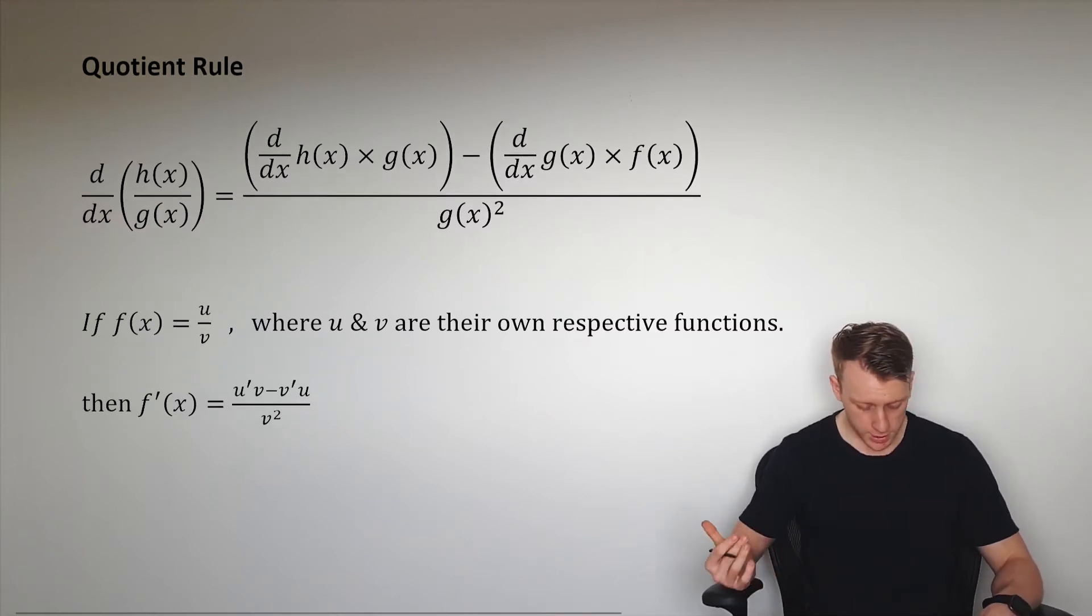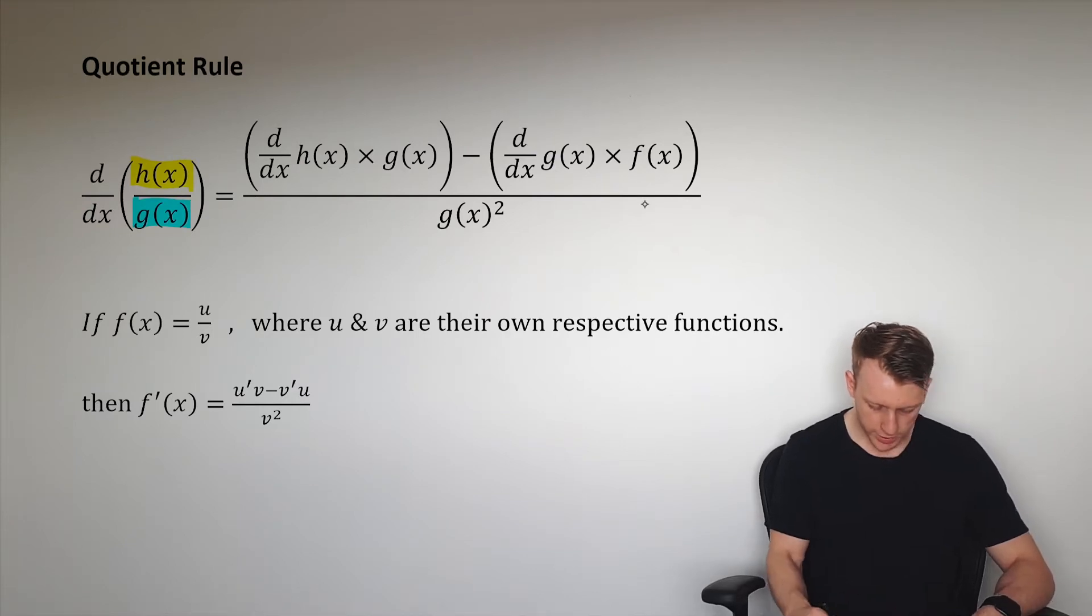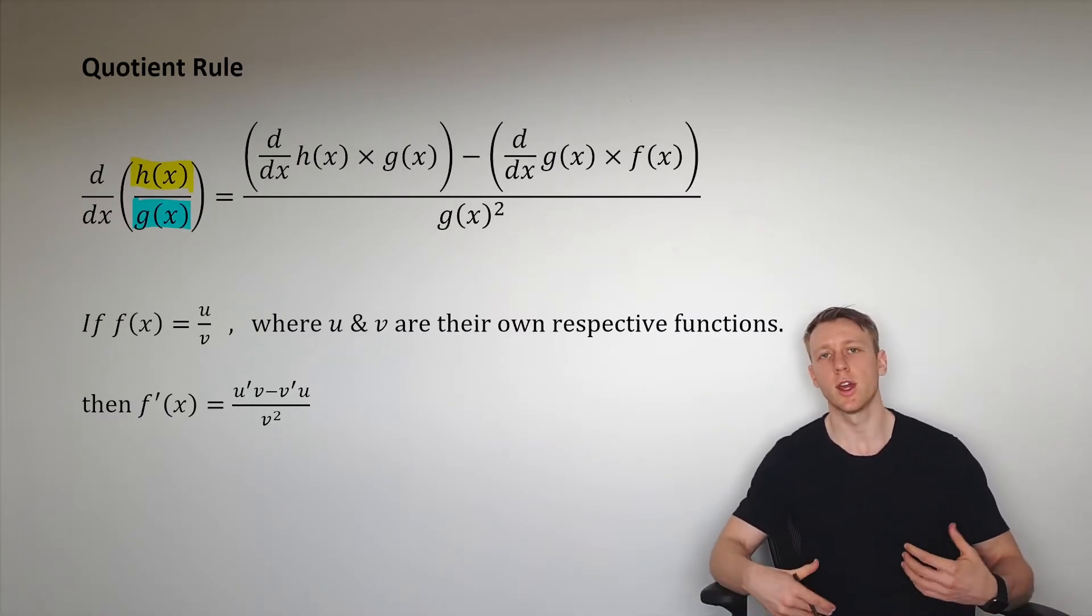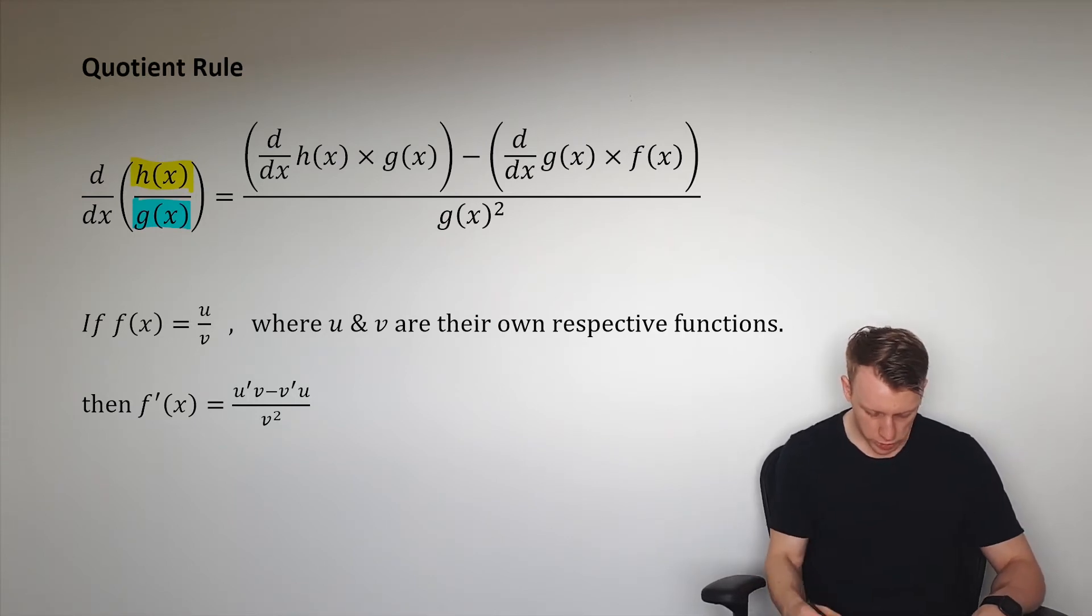The second rule we're going to look at is the quotient rule, where we've got h(x) divided by g(x). We're going to look at the small change, which is d/dx. I can appreciate that this is a rather horrible expression to look at.